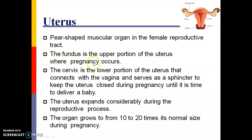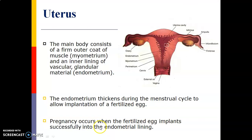The uterus is a firm muscular organ in the female reproductive tract. The fundus is the upper portion of the uterus. The cervix is the lower portion that connects with the vagina and acts as a sphincter to keep the uterus closed during pregnancy until it is time to deliver the baby. The uterus expands considerably during the reproductive process — the organ grows to four to twenty times its normal size during pregnancy.